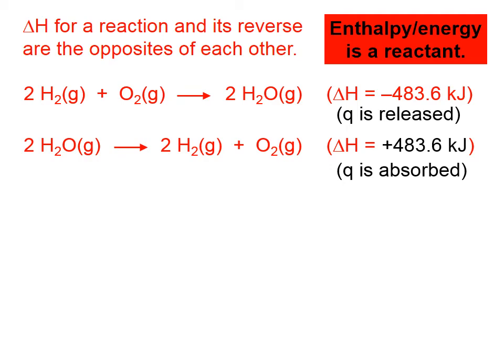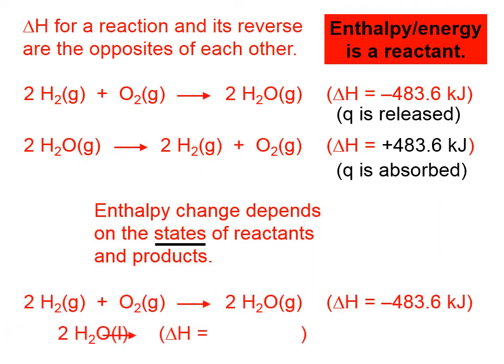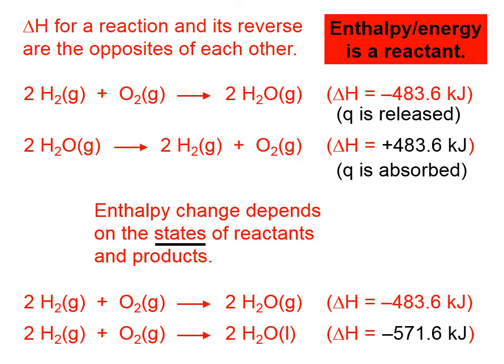The enthalpy change depends on the states of reactants and products. There we have our first equation again. Suppose we have something similar, but instead of the product being 2 moles of water vapor, we have 2 moles of liquid water. Would there be more or less energy released in the second case? And the answer is, more energy will be released, because 2 moles of liquid water have less internal energy than 2 moles of water vapor. So to give us 2 moles of liquid water, we would have to release more energy. So we shouldn't be surprised that this number is also negative, but has a bigger magnitude than when we produce water vapor.